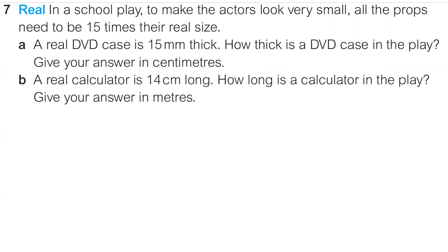Similarly with B, a real calculator is 14 centimetres long — how long in the play? But then it asks you to convert that into metres, so again think about when you're going to do that. If you kept it as 225 millimetres for part A, you need to do that last conversion, so please correct that. With B, if you said 210 centimetres and left it at that, add those corrections in because that would lose you a mark in a test. We have to be really careful when it asks us to give an answer in a specific unit — we have to convert into that unit, otherwise the examiners can take marks away from us.